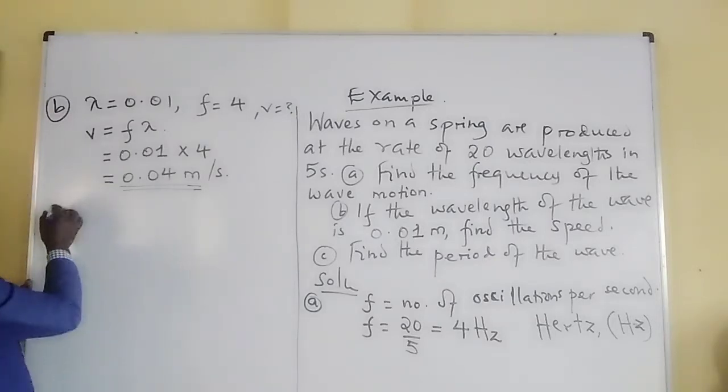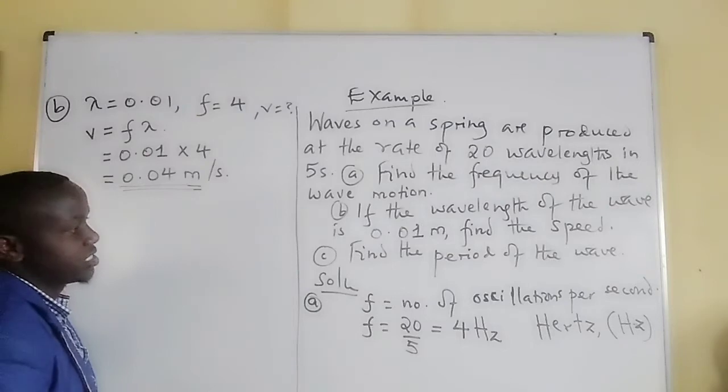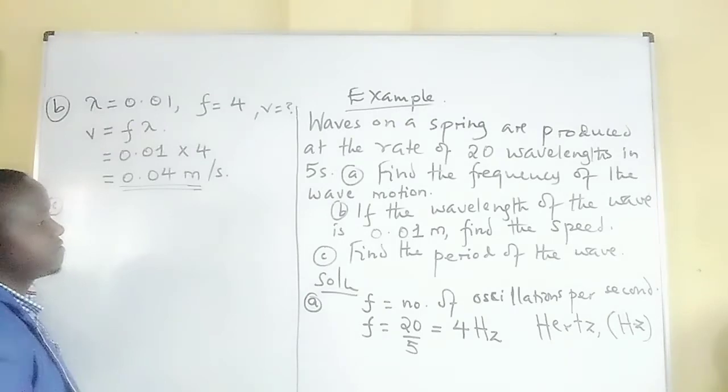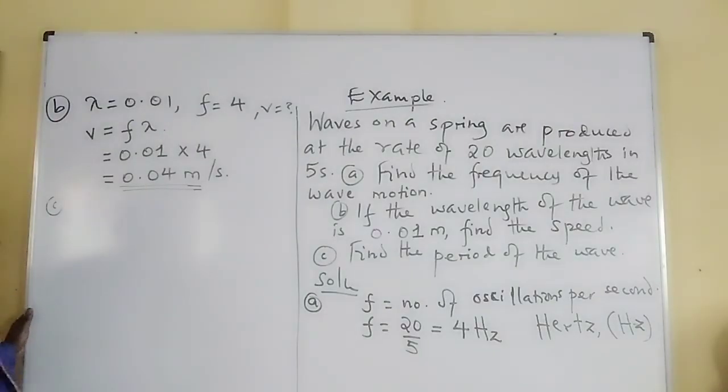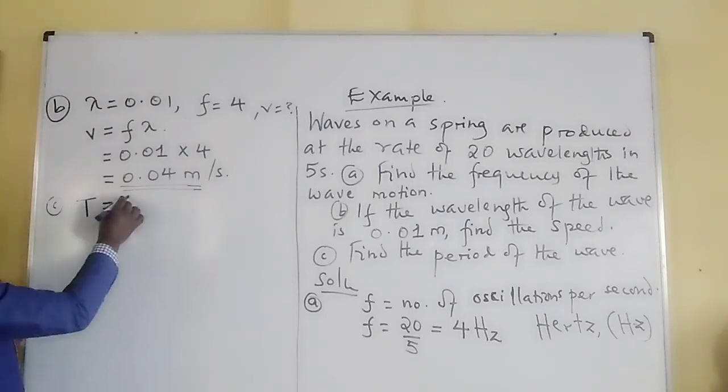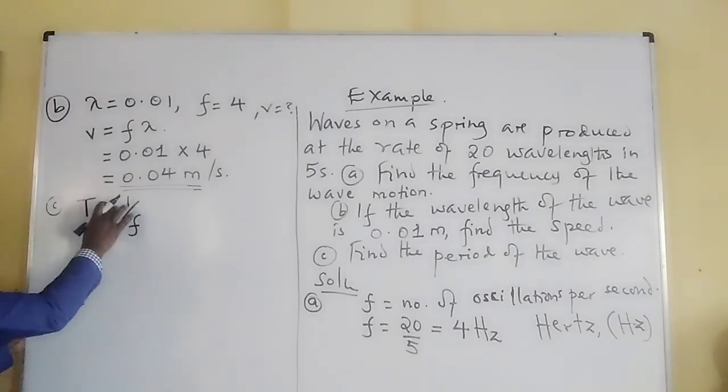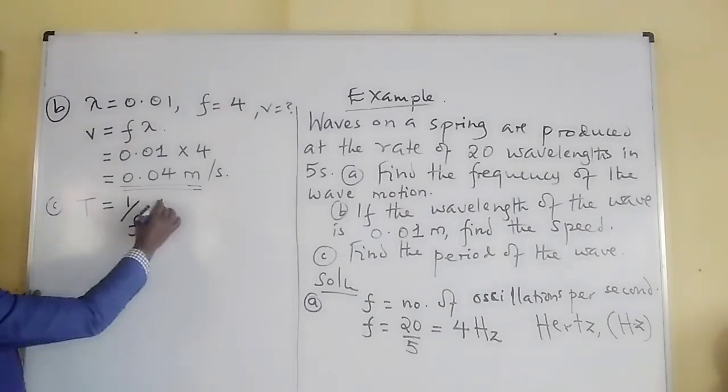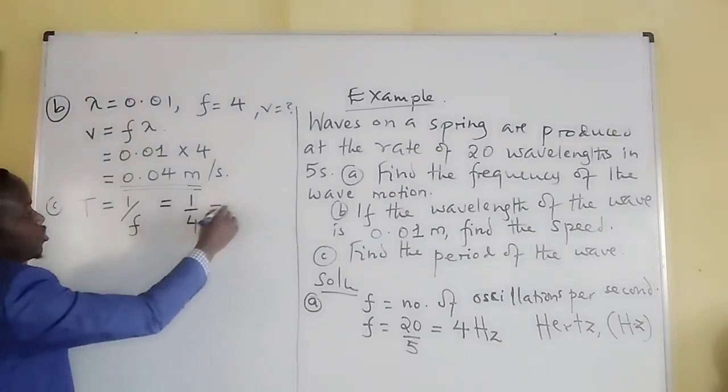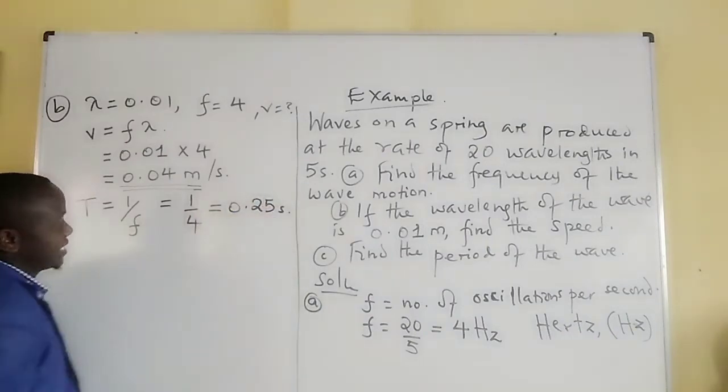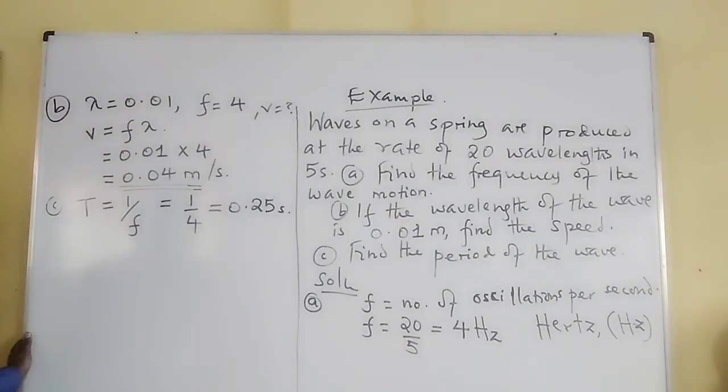Part C: Find the period of the wave. We know that period T is given by the reciprocal of f. Period T is given by the reciprocal of f. So in this case, you get the reciprocal of 4, which will be 0.25 seconds.